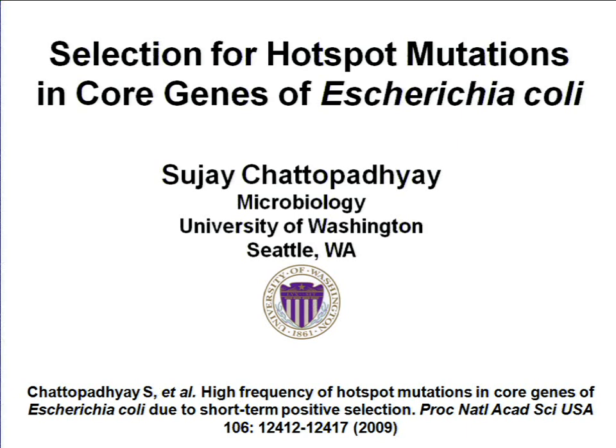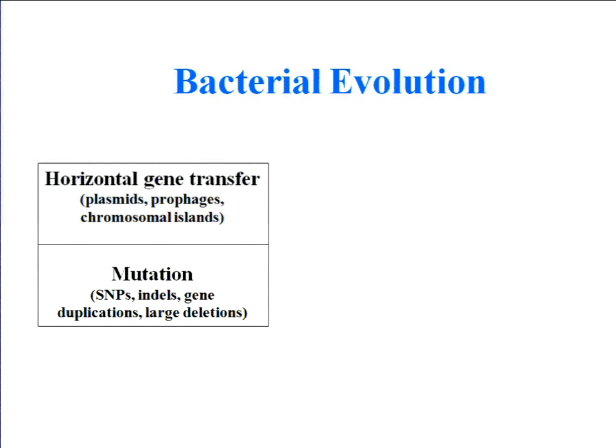Good morning everyone. The title of my talk is Selection for Hotspot Mutations in Core Genes of E. coli. I would start with a very basic slide of bacterial evolution. There are two major genetic mechanisms: horizontal gene transfer and mutation.